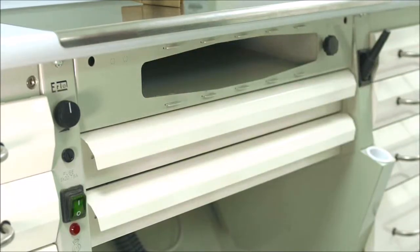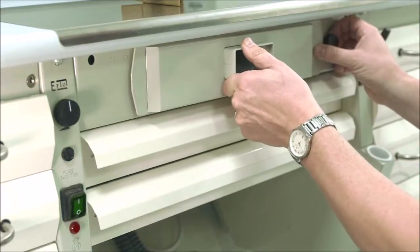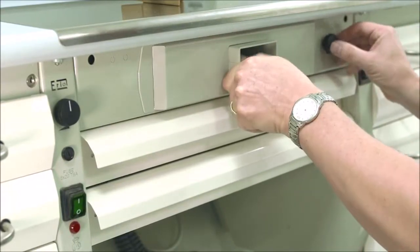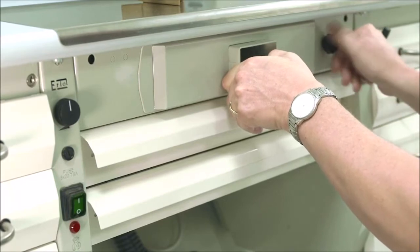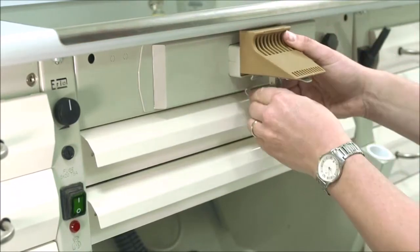Once you've replaced the filter, push back into the table, push to the right and tighten the black knob and replace the bench peg.